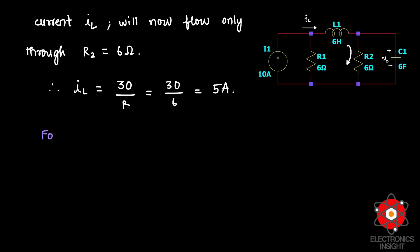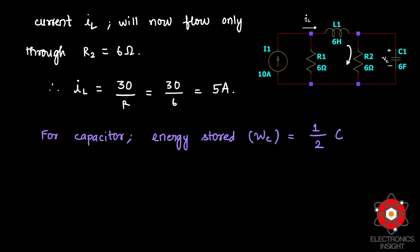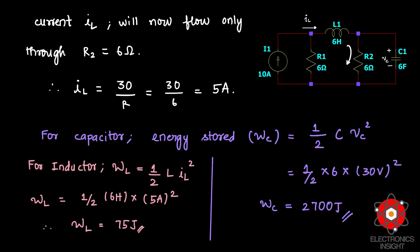The energy stored in the capacitor is Wc = ½ × C × Vc² = ½ × 6 farads × (30)² = 2700 joules. The energy stored in the inductor is WL = ½ × L × IL² = ½ × L × (5)², giving 75 joules.